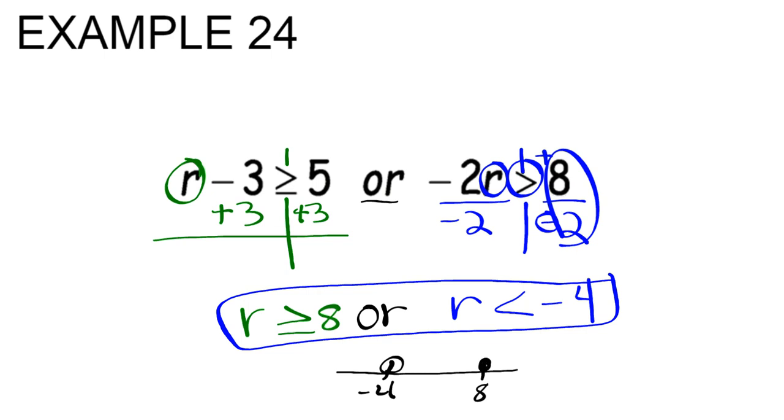Then I take a look and I know that 8, it says r is greater than 8, so that's going to go to the right. And then on the other one, it says r is less than negative 4, so that's going to go to the left. And that's what it would look like graphed on a number line.